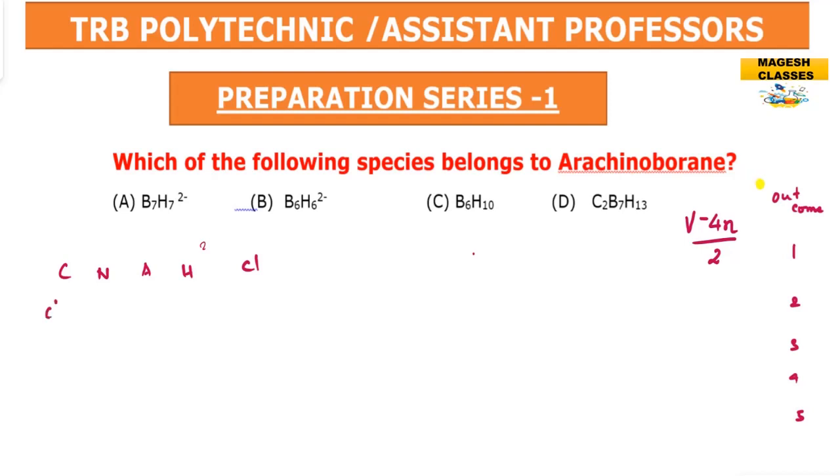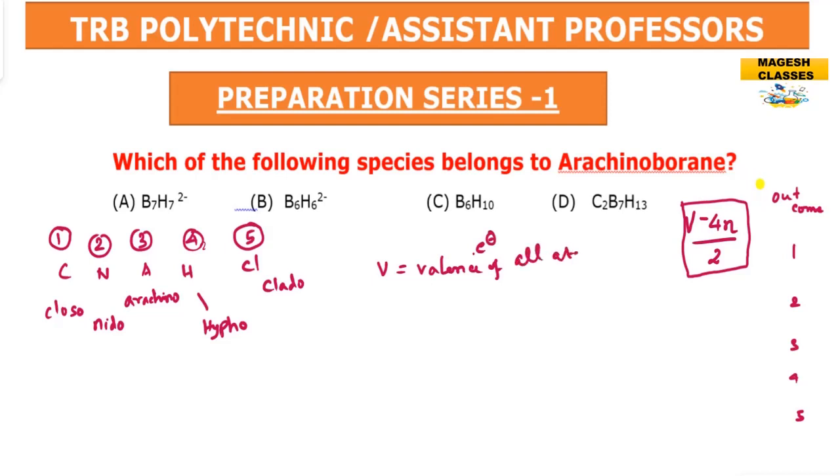The classification includes: closo, nido, arachno, and hypo types. These are all boranes and carboranes types. We use V minus 4n divided by 2. The outcome values 1, 2, 3, 4, 5 correspond to closo, nido, arachno, hypo, and another type. V represents valence electrons, which is easier to understand as valence electrons of all atoms in the borane or carborane.